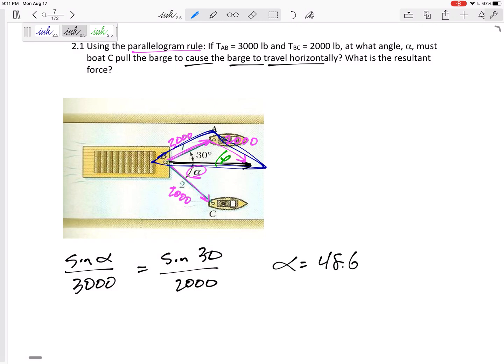So alpha would be 48.6. But be careful. This could also be what? If this adds up to 180, 131.4 or something. But I think we can tell that it's not 131.4. If it's 130, it would be pulling it that way. So yeah, 48.6 degrees. So that is the answer right there.